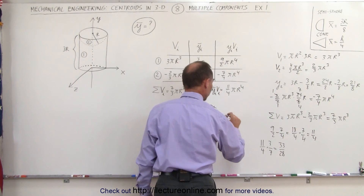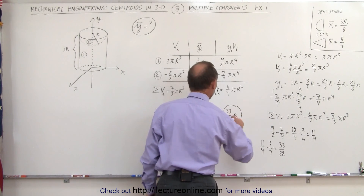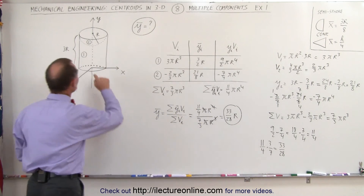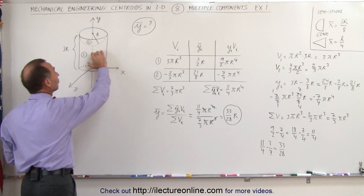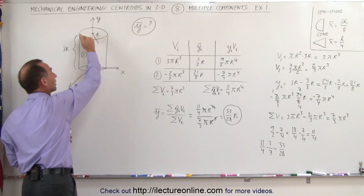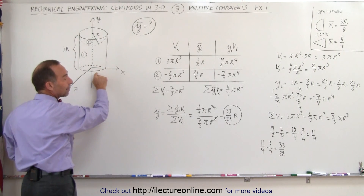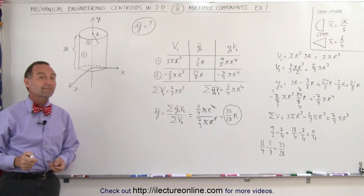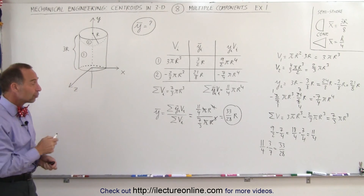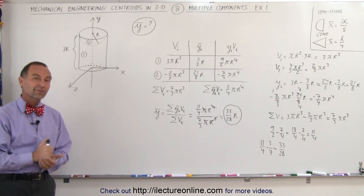Eleven-fourths divided by seven-thirds is the same as multiplying by its inverse — times three over seven — which equals 33 over 28. So the centroid becomes 33 over 28 times r. That's a little bit more than r from the origin — not quite to the halfway point of the cylinder because we have that portion hollowed out. So it's 33 over 28 r from the origin, and that's the centroid in the y direction of this particular object.